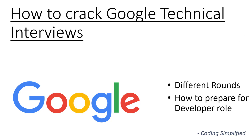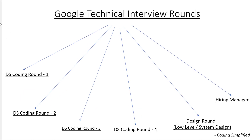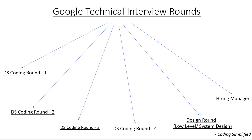First, let's look at the different rounds in Google's technical interviews for software engineering roles. Candidates range from freshers to those with three to four years of experience, or even ten to twelve years. Google is a product-based company and they focus a lot on logic and problem solving, which is why most rounds are data structure and coding rounds.